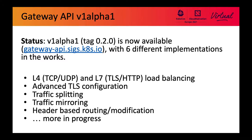V1 Alpha 1 includes features such as L4 and L7 load balancing, advanced TLS configuration beyond what is currently possible with ingress, traffic splitting, traffic mirroring, header-based routing and modification, and a lot more is in progress. Please visit the website for more details.